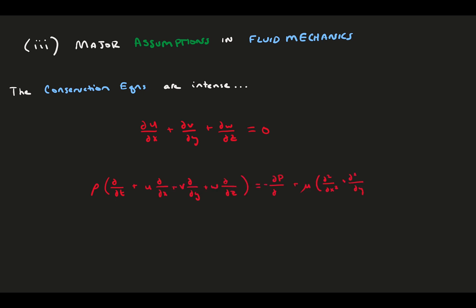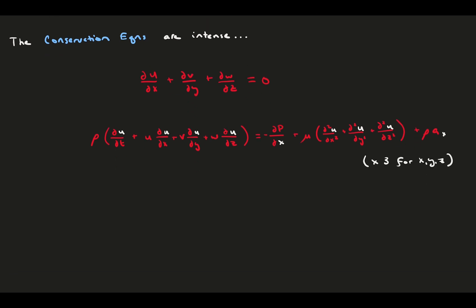These make up four equations total, one for conservation of mass and three for conservation of momentum, and there are technically four unknowns that we can solve for, specifically the velocity field u, v, and w, and the pressure.